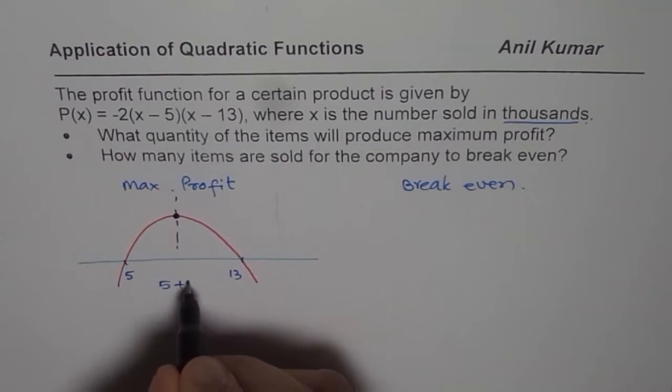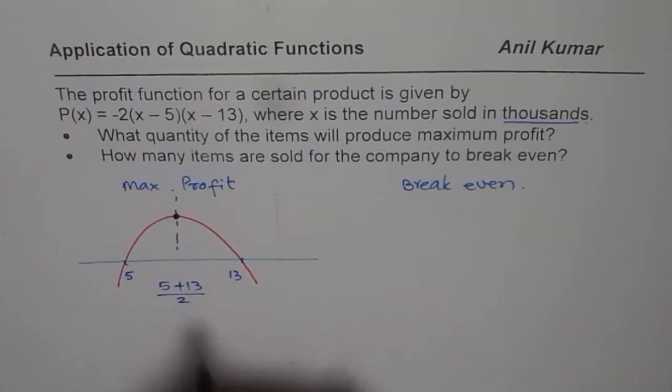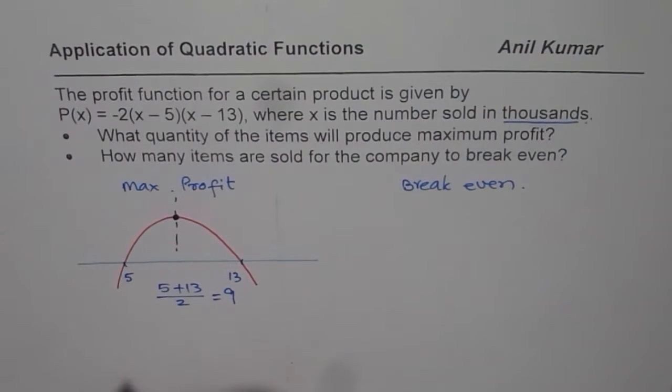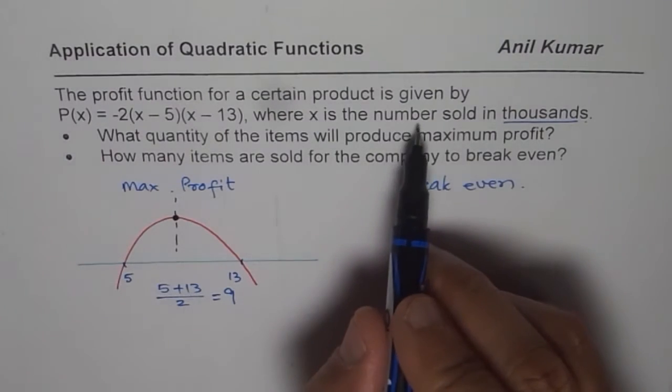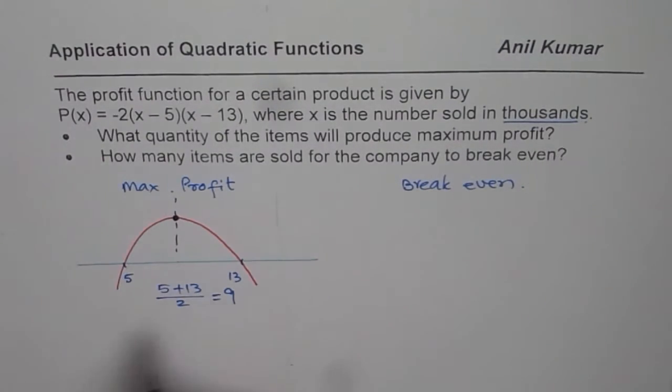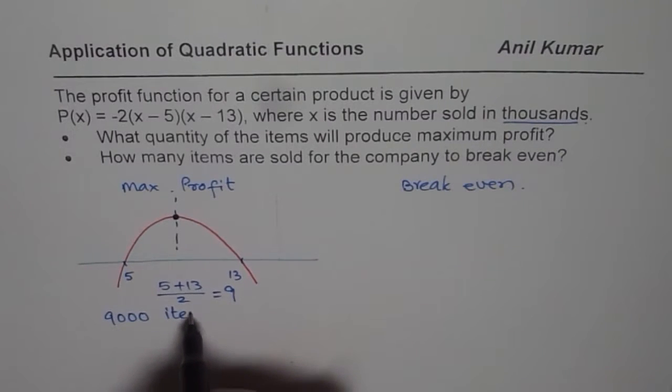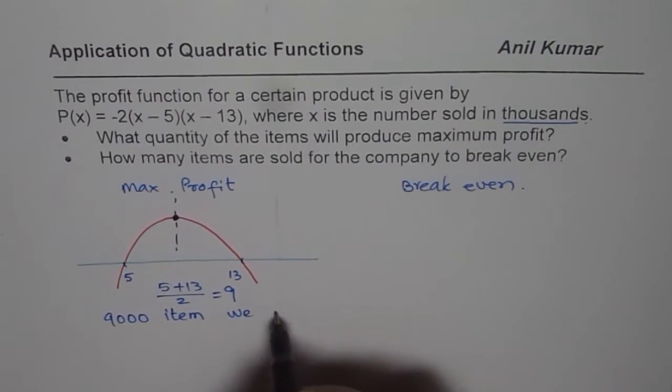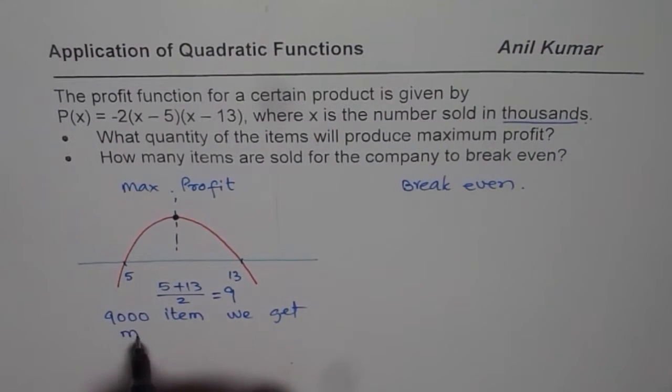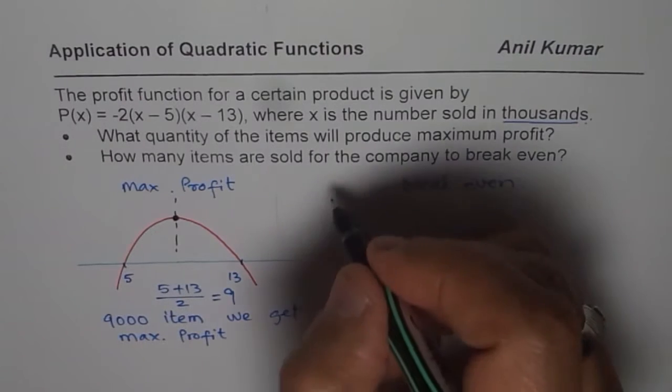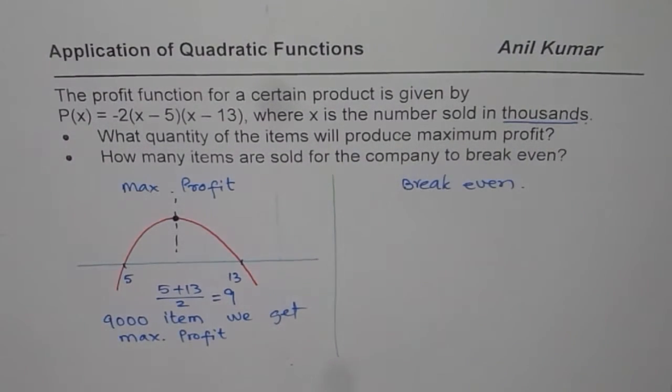We will have 5 plus 13 divided by 2. Now, 5 plus 13 is 18 divided by 2 is 9. So, the maximum profit is for 9 and the units are number of items in 1,000. So for 9,000 items, we get maximum profit. That is how you have to answer one part of this question.